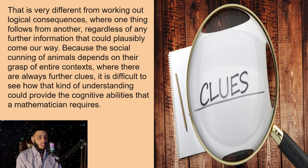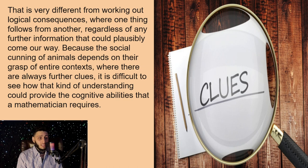That is very different from working out logical consequences, where one thing follows another, regardless of any further information that could plausibly come our way, because the social cunning of animals depends on their grasp of entire context, where there are always further clues. It is difficult to see how that kind of understanding could provide the cognitive abilities that a mathematician requires.